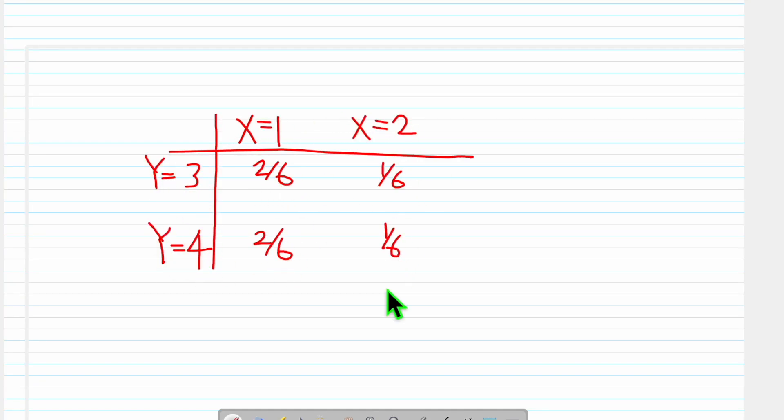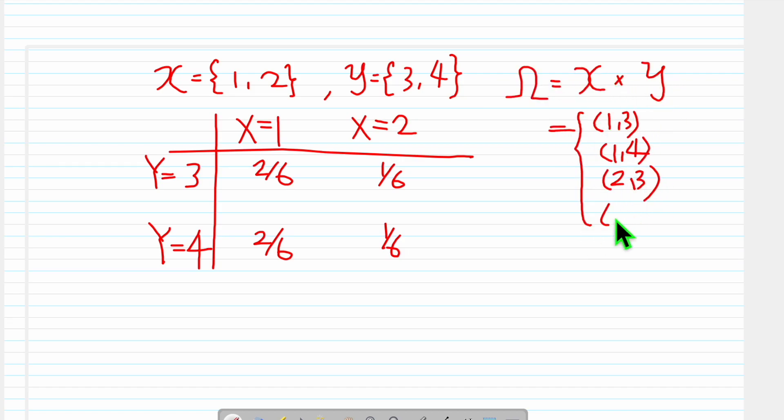So suppose we are given this probability table. Here the sample space of X is basically 1 and 2. The sample space of Y is 3 and 4. The sample space of the whole thing will be the Cartesian product of X and Y.